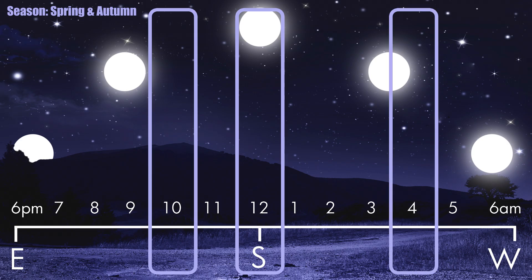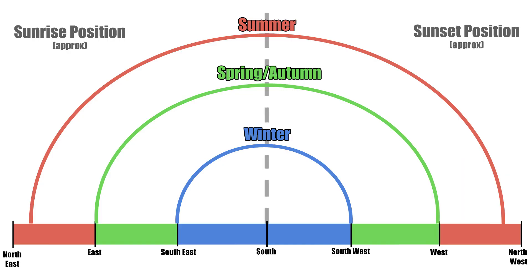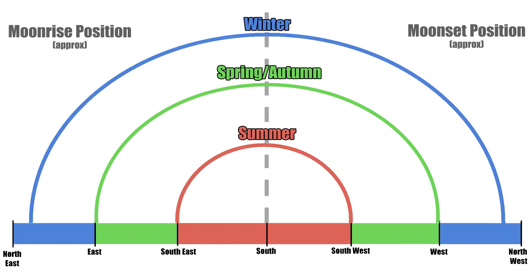One more thing to consider if you want to go next level. When I say the moon rises in the east and sets in the west, that's subject to seasonal variation, as is the sun. You know how in the summer, the sun rises and sets more so in the northeast and northwest respectively, rather than bang on east and west, and in the winter it rises and sets more so southeast and southwest? Well, the opposite is true for the moon. In the summer it will rise more southerly; in the winter it will rise more northerly. How interesting. Take this into consideration and your accuracy will be next level.